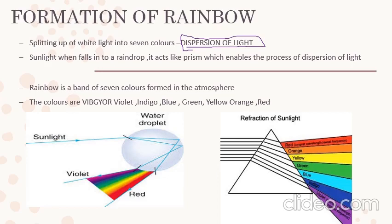What are the seven colors? From violet to red — we call them VIBGYOR: violet, indigo, blue, green, yellow, orange, and red. So these seven colors together are termed VIBGYOR. All these seven colors exist in nature — they are formed in the atmosphere. This can be obtained in your labs also. Instead of a water droplet, we use a substance called a prism.